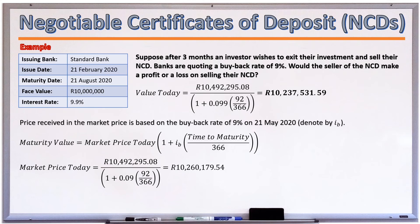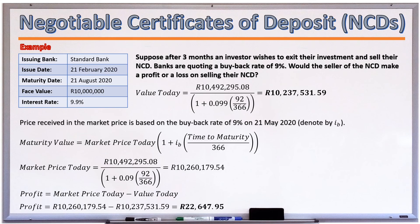We compare the market value of the instrument if sold today versus if held to maturity. The market price is 10,260,179.54 rand, while the hold-to-maturity value today is 10,237,531.59 rand. Therefore, selling the NCD today would result in a profit of 22,647.95 rand.